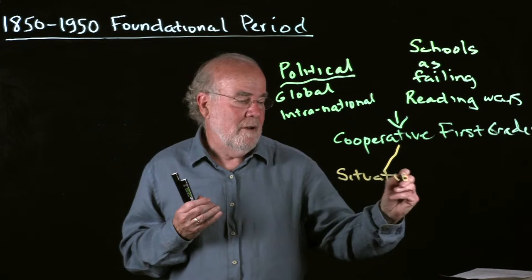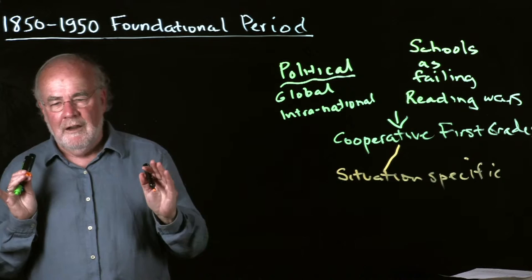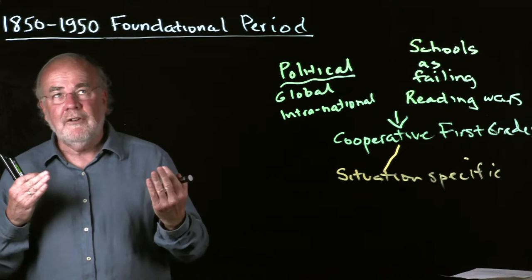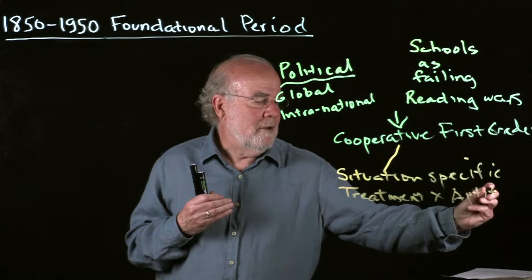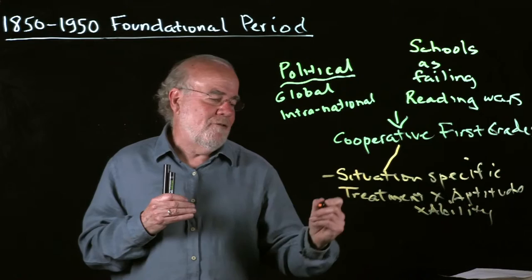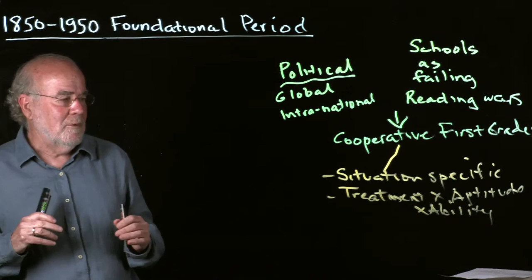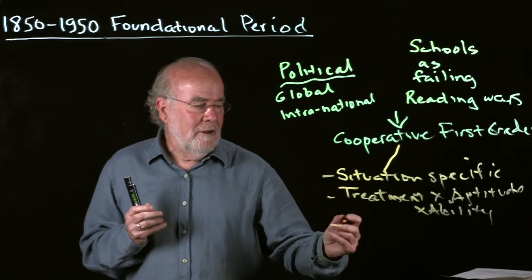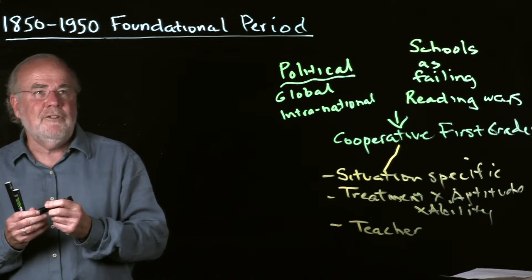And then they also found what is the most common result of any educational research experiment, which is, if you're doing educational research, you need to set yourself up so you can be open to this, which is a treatment by aptitude or ability effect. In other words, different kids have different abilities and different aptitudes respond differently to different methods. So you've got this situation-specific finding. You've got this treatment aptitude ability effect, which is widespread in pretty well any educational study of any method. And then you've got another effect, which is it depends upon the teacher.